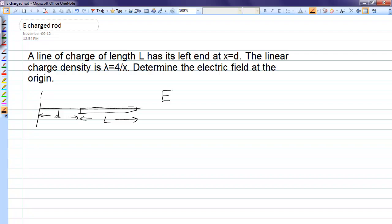The formula on the formula sheet for electric field is E equals k dq over r squared r hat. In our case, since we're on the x-axis, we'll have our little dq a distance x from the point of interest. So we're trying to find the electric field at the origin.